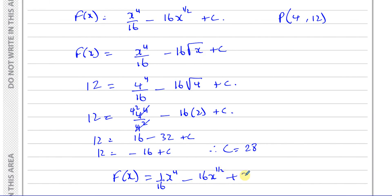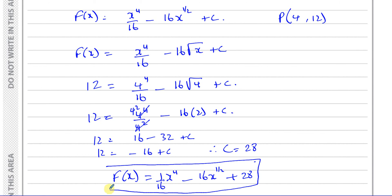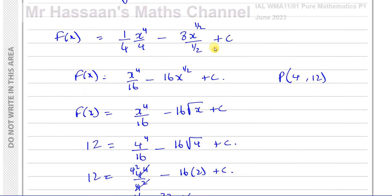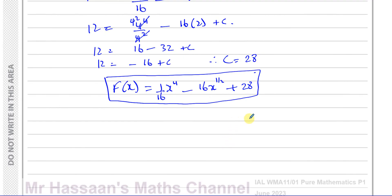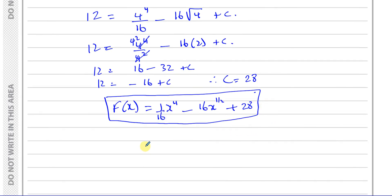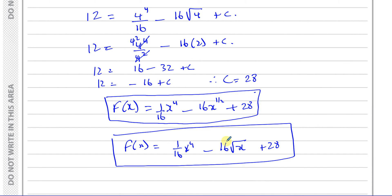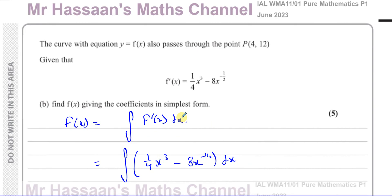So the equation of the curve is f(x) equals one sixteenth x to the power of 4 minus 16x to the power of one half plus 28. We can also write this as f(x) equals one sixteenth x to the power of 4 minus 16 times the square root of x plus 28 — both forms are perfectly fine. That concludes question 8 from the June 2023 International A-Level Pure Mathematics P1 paper. Part A was differentiation, Part B was integration.